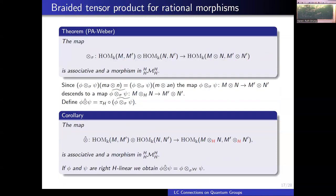Out of this, we can induce what we need: a morphism between bicoinvariant bimodules, where — and I stress it here — this is a bicoinvariant bimodule, this is a bicoinvariant bimodule, and here I have the bicoinvariant bimodule of k-linear rational morphisms from M tensor_H M to M' tensor_H M'. This is an associative morphism in the category of bicoinvariant bimodules. And if phi and psi are right H-linear, then this becomes exactly the previous formula — so it is a lift of the earlier construction.